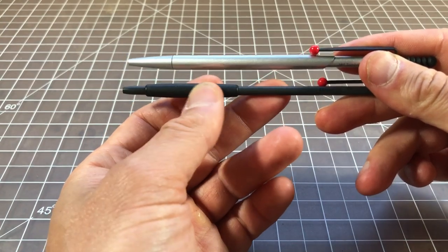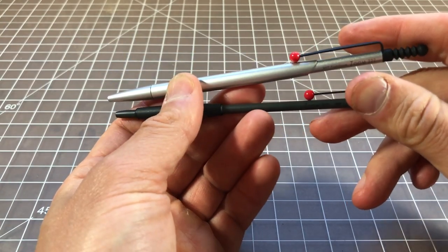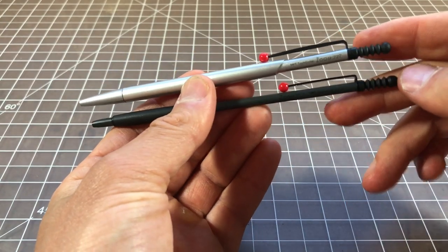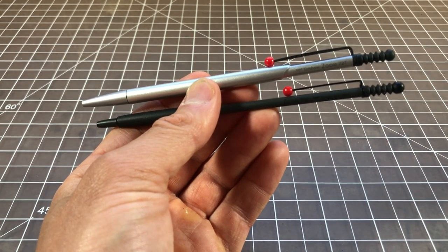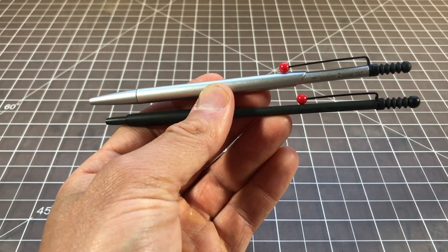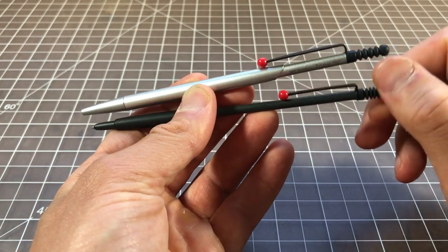707 has a rubber grip, 727 is all metal. I think the 727 looks a lot cooler even though it is a fair bit heavier. Same clip on both and then the number one biggest difference of them all is you have a twist versus a push.